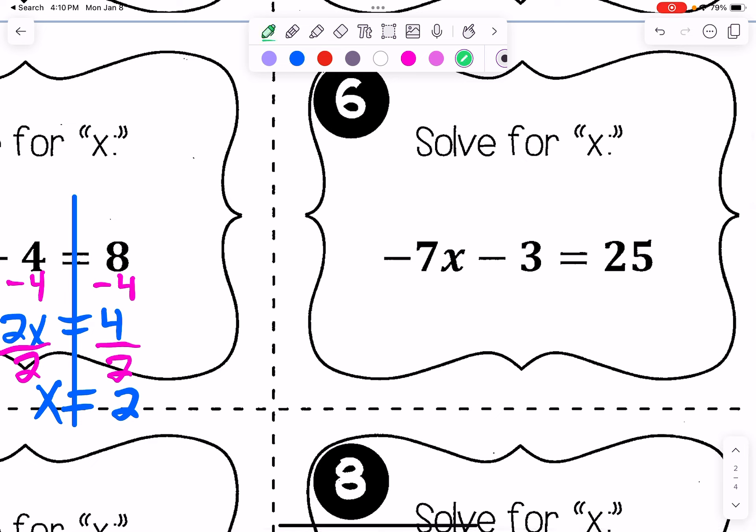Next, kind of similar one. If it helps you to put that line down the middle, you totally can. We're going to add 3 to both sides. That would leave us with negative 7x equals 28. Last step is to divide by negative 7. You do 28 divided by negative 7, get x equals negative 4.